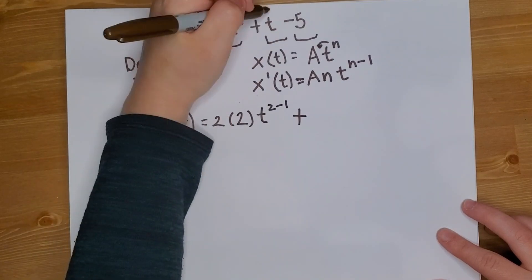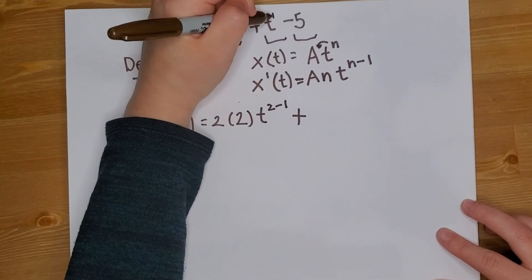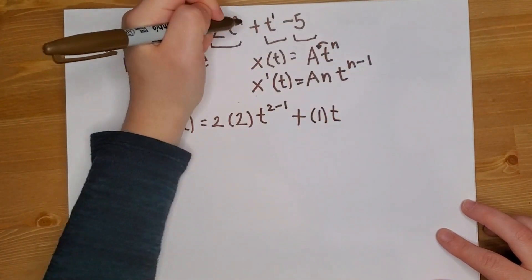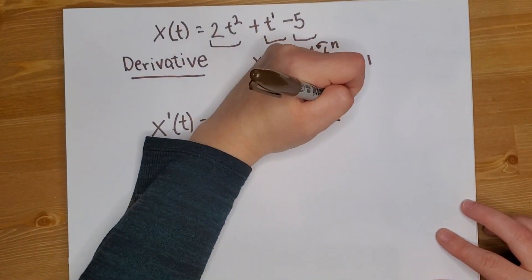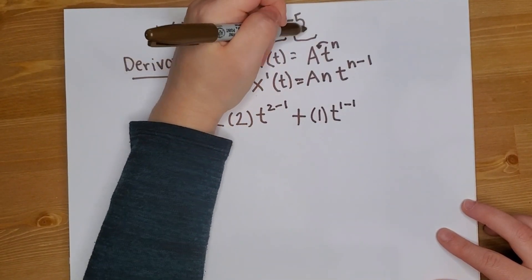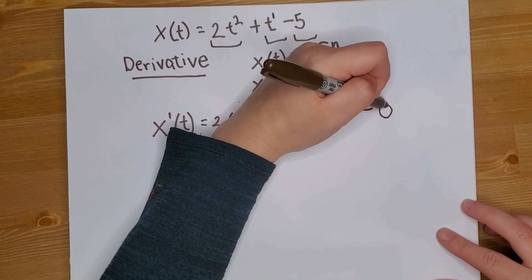Plus, well I have a 1 constant here, and t alone is only t to the 1. So then I have 1 times t^(1-1). And then my constant, because there's no t, the derivative of a constant is actually just 0.